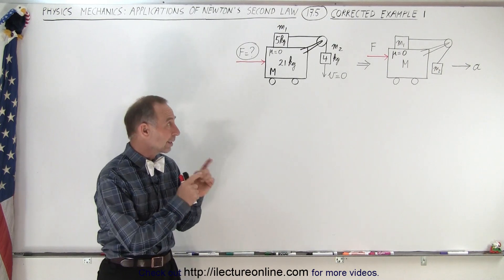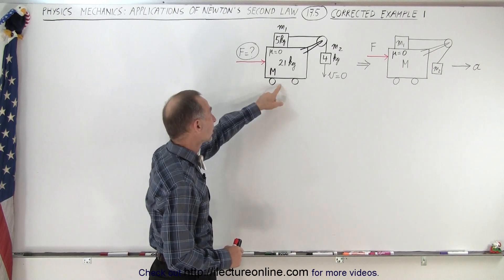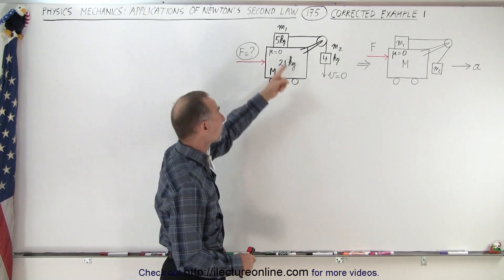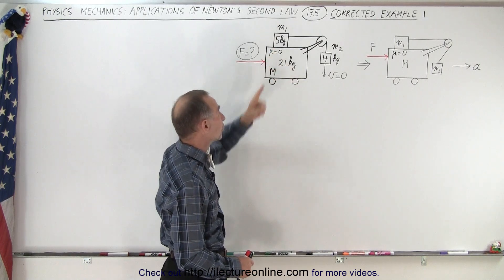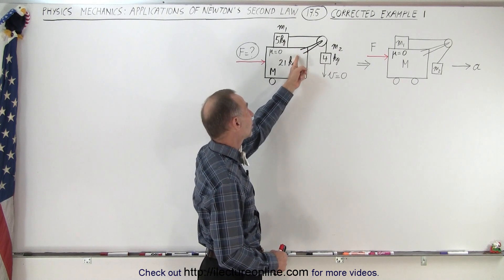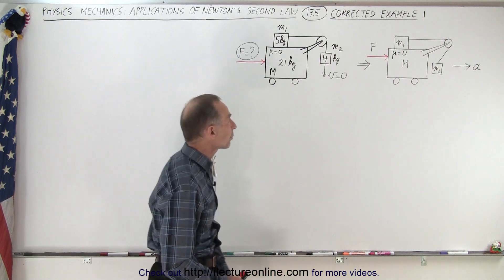So here we are, there's the problem. We have a car on a wheel, let's say the car has a mass of 21 kilograms. On top of that car we have another mass of 5 kilograms, and notice there's no friction between the two masses. Then we have a pulley attached to the car, a string attached to a third mass. And here that one is 4 kilograms.